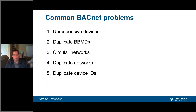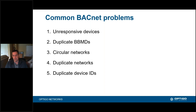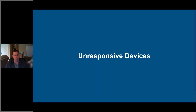We're going to start with unresponsive devices, and we'll cover the following topics: unresponsive devices, duplicate BBMDs, circular networks, duplicate networks, and duplicate device IDs. Each one of these is a check we do within Visual BACnet, so it's very easy to see if this is a problem within your network. What we're going to show you is how to deal with them specifically.